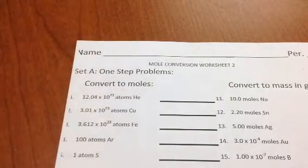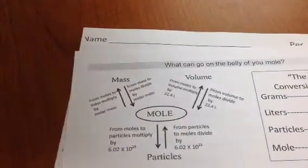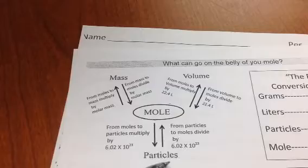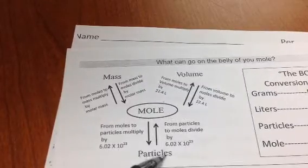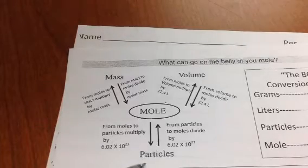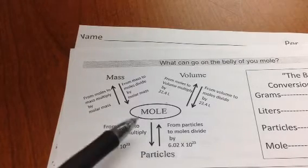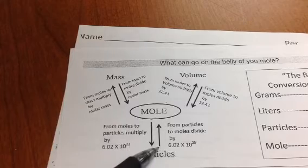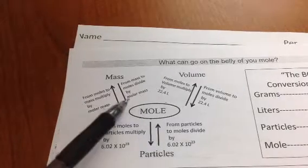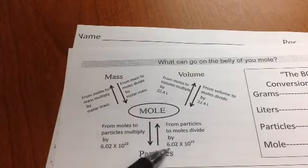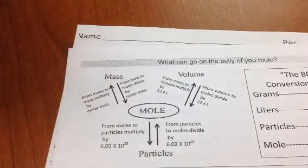To do that, I have to use this mole map. This mole map is describing to me the process, and I'm starting with atoms, so that means particles. And if I'm starting with particles, I am going to be going to moles, so I've got to follow the arrow that starts with particles and goes to moles. To go from particles to moles, I divide by 6.02 to the 23rd.